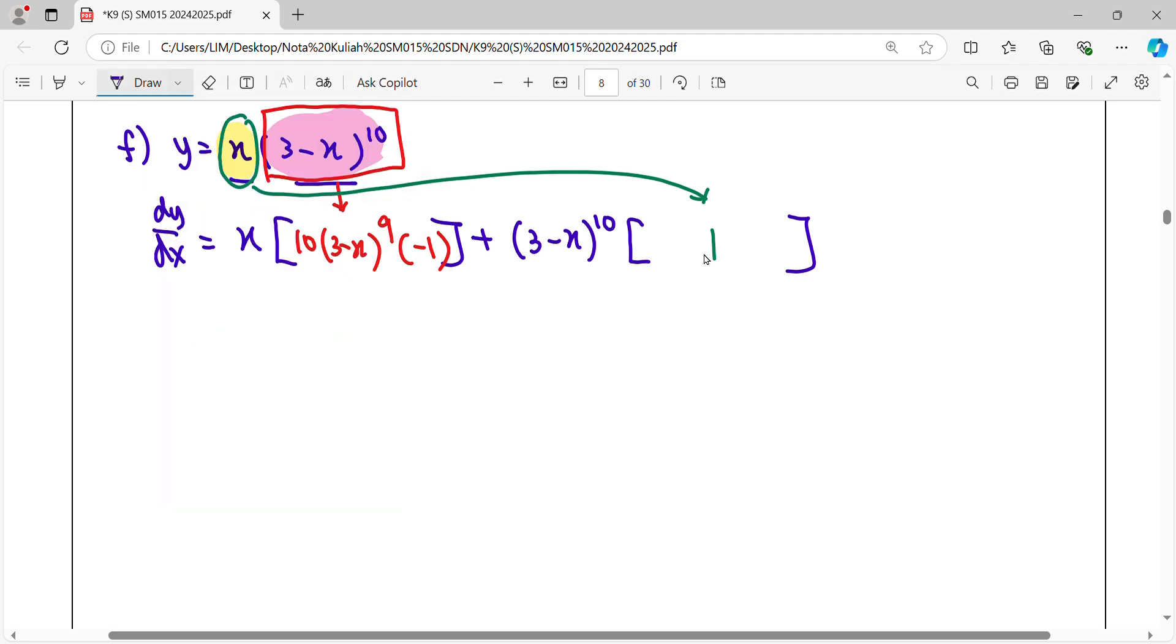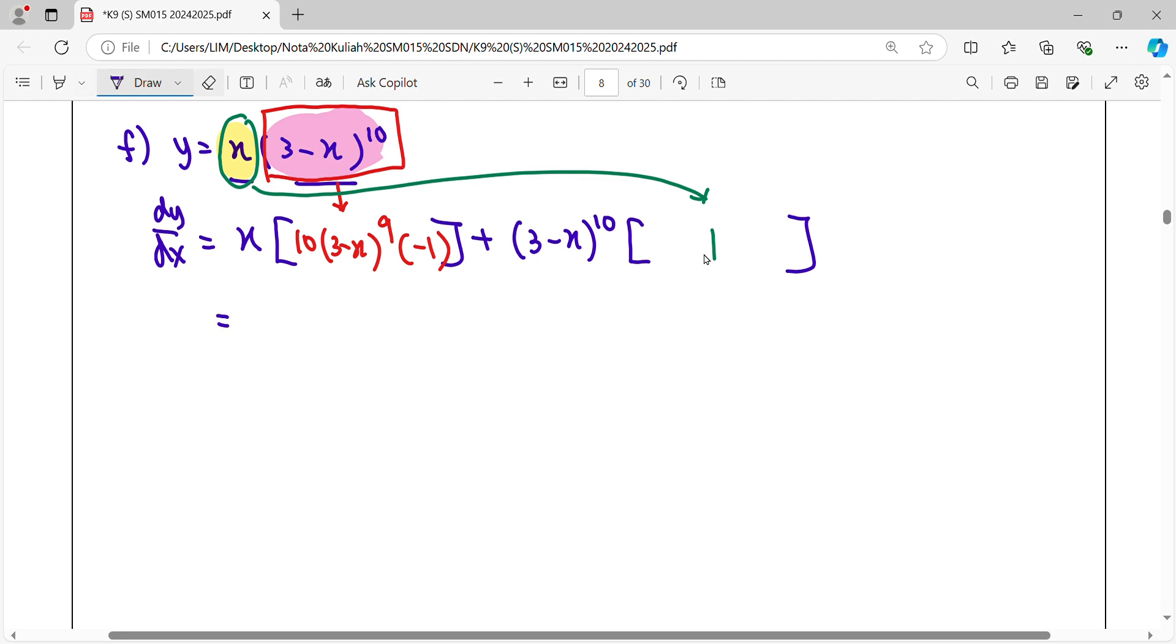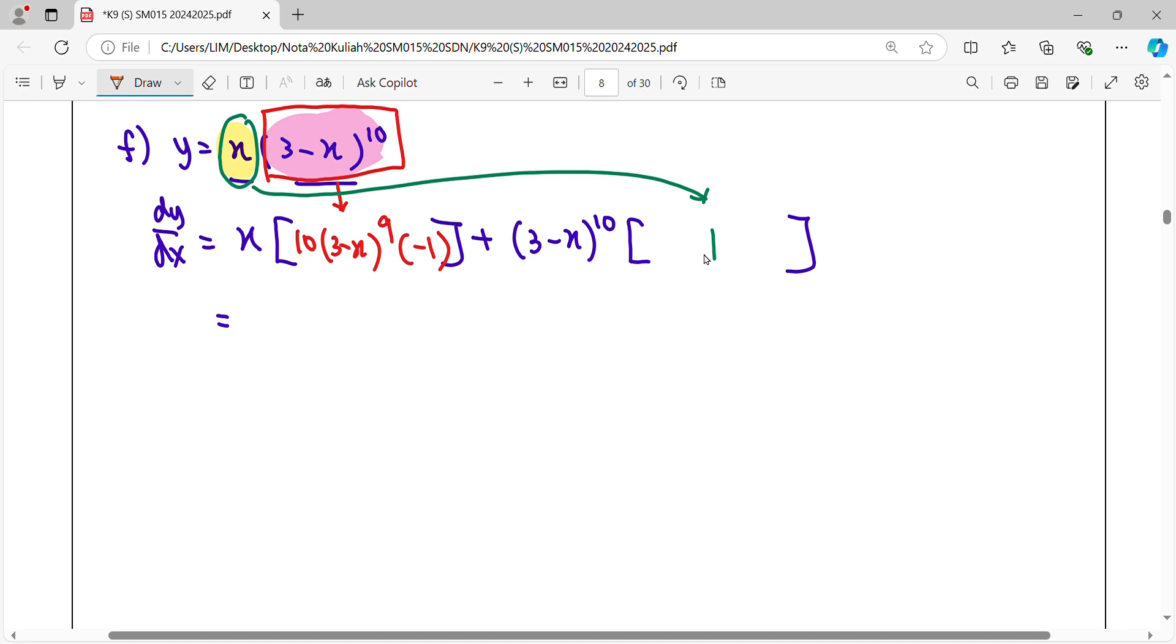Then lastly, we simplify. How we're going to simplify? We're going to factorize the same factor. The same factor, 3 minus x for the first term and the second term here. So factorize up, 3 minus x for the power of 9.